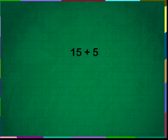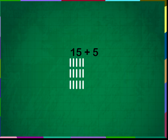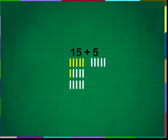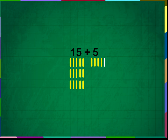Add 15 plus 5. Draw 15 vertical lines below 15 and 5 small lines below 5. Now count all the lines: 1, 2, 3, 4, 5, 6, 7, 8, 9, 10, 11, 12, 13, 14, 15, 16, 17, 18, 19, 20. Therefore, 15 plus 5 is equal to 20.